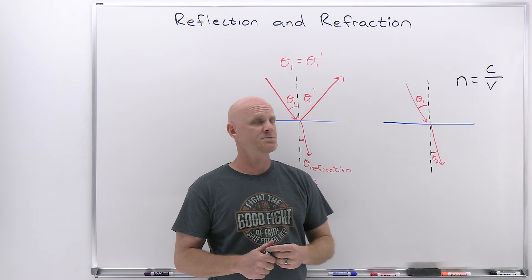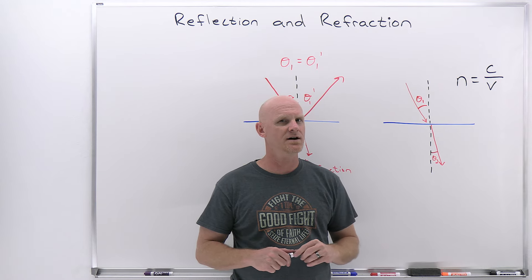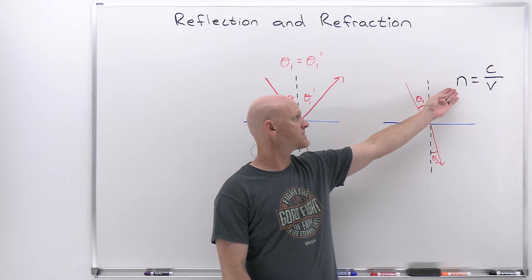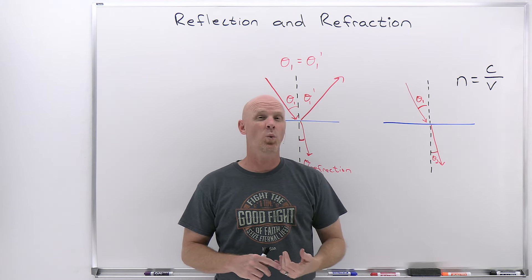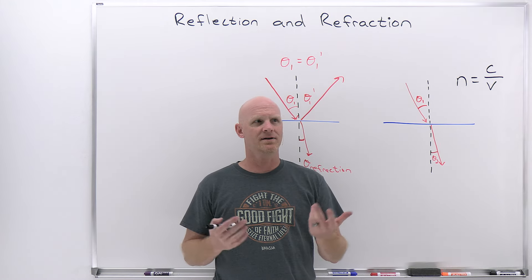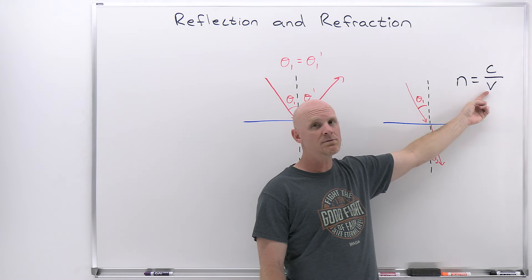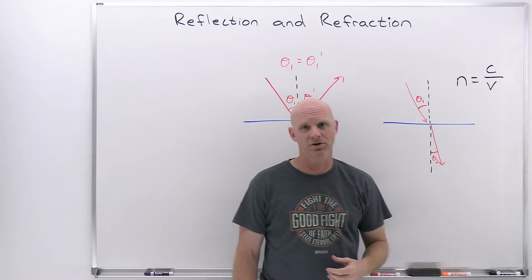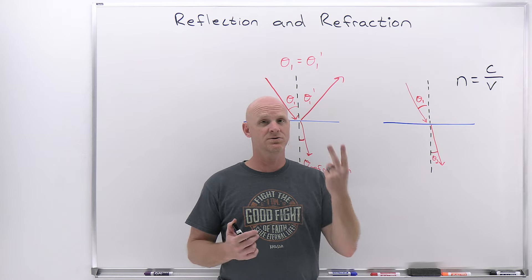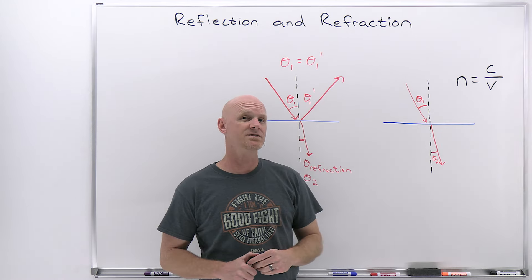The speed of light in air is almost exactly 3.0 × 10⁸ meters per second, making the index of refraction for air about 1.0003, whereas for a vacuum it's exactly 1 by definition. At two significant figures, the speed of light in air and in a vacuum are treated as identical — 3.0 × 10⁸ m/s — because you have to carry out many more sig figs to see where they differ appreciably.